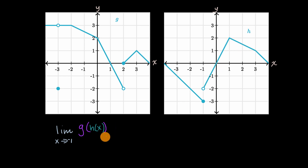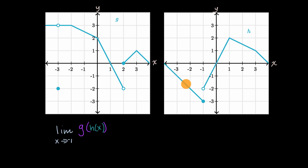Pause this video and have a go at this. Your first temptation might be to find the limit as x approaches negative one of h of x, and if that limit exists, then input that into g. But if you take the limit as x approaches negative one of h of x, you see that you have a different limit as you approach from the right than from the left. Your temptation might be to give up, but in this video we'll realize that this composite limit actually exists, even though the limit as x approaches negative one of h of x does not exist.